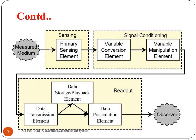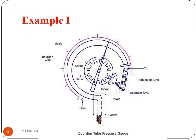For example, looking at the Bourdon tube pressure gauge: the input signal is pressure, and due to the pressure difference in this area, the tube will expand or contract. In response, the tip of the tube is connected to the segmented lever using an adjustable link, and from the segmented lever it is connected to a gear, from which a dial gauge is fixed. The input signal is pressure and the output is the dial indicator readout.